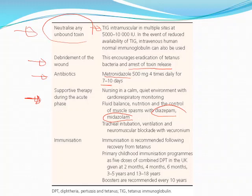After the patient recovers from tetanus, he should receive active immunization. Primary childhood immunization programs use 5 doses of combined DPT — diphtheria, pertussis, and tetanus — given in the UK at age 2 months, 4 months, 6 months, 3 to 5 years, and last dose at 13 to 18 years. Boosters should be given every 10 years. In cases where the patient develops tetanus, after recovery he should receive active immunization.